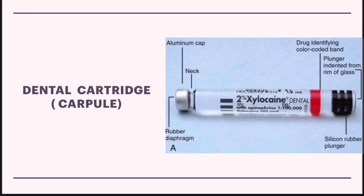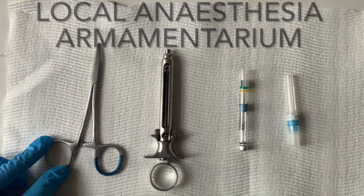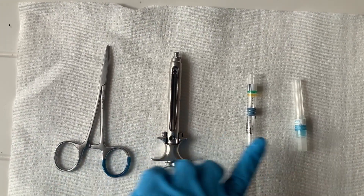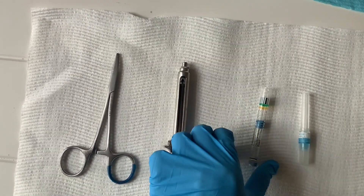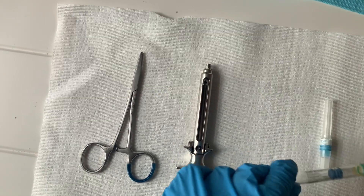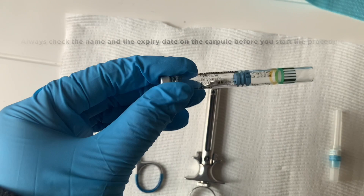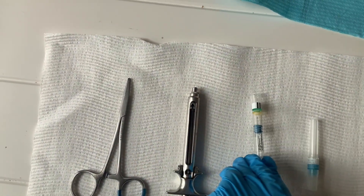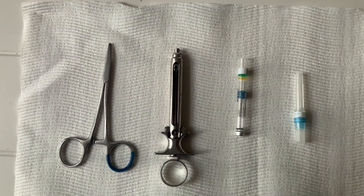Next is the dental carpule or dental cartridge. We have our forceps, local anesthetic syringe, local anesthetic carpule, and needle. Before we start, we have to make sure we have the correct type of local anesthetic cartridge or carpule we want to use, and also we need to check the expiry date on the carpule.